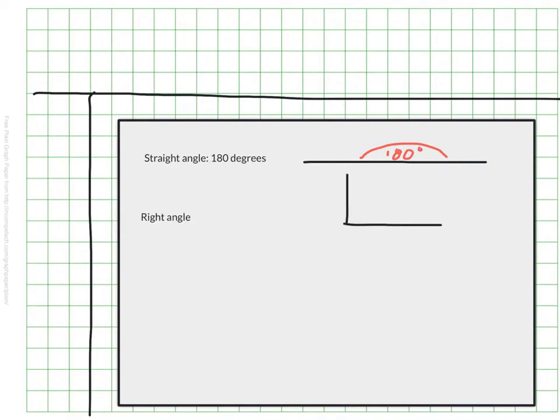If you dropped a line straight down in a perpendicular fashion, like we see here, you'll have an angle that is exactly half of your straight angle. This is a 90 degree angle right here. And I mark it with that little square here, but it's a 90 degree angle. And we call this a right angle.